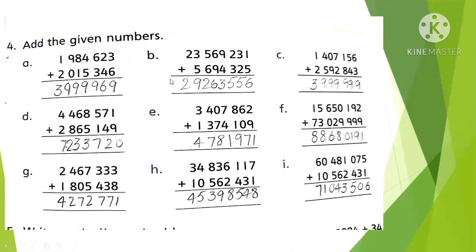Part B: 1 plus 5 is 6, 3 plus 2 is 5, 2 plus 3 is 5, 9 plus 4 is 13 — write 3, carry 1. 6 plus 1 carry is 7, then 7 plus 9 is 16 — write 6, carry 1. 5 plus carry 1 plus 6 is 12 — write 2, carry 1. 3 plus 1 carry is 4, 4 plus 5 is 9, and 2 is left. We will do all remaining questions following this method.